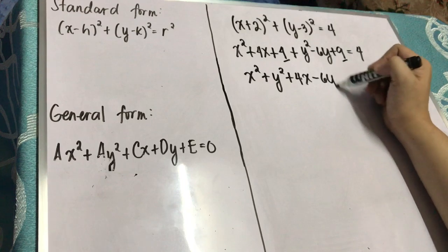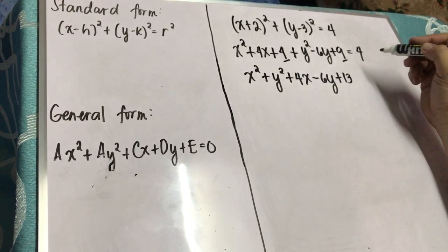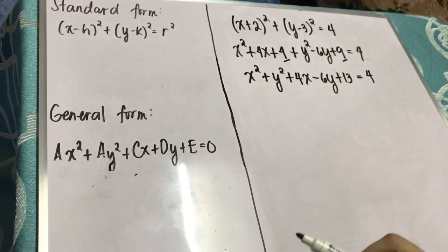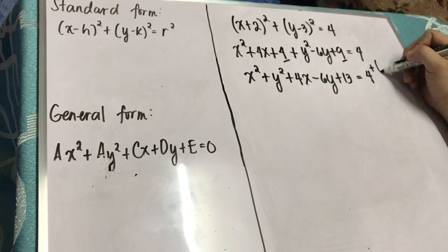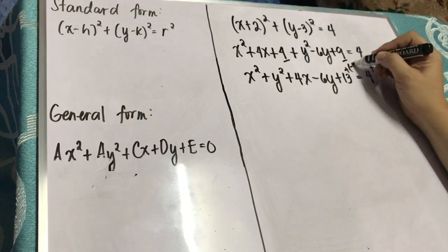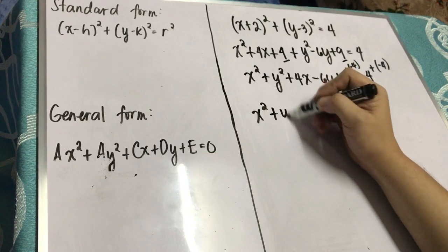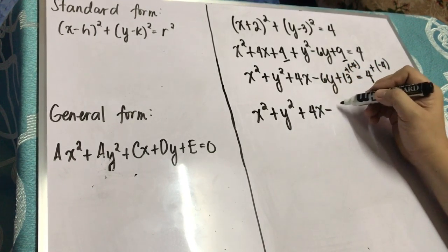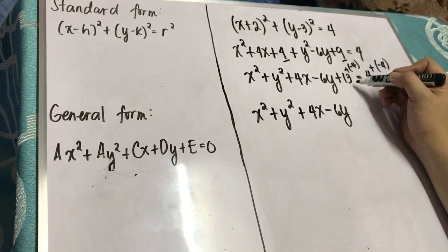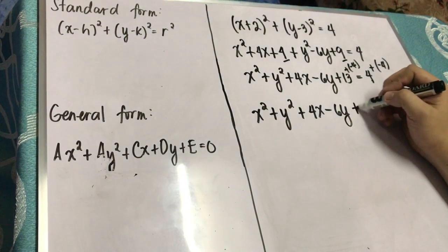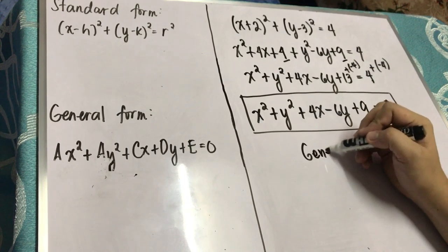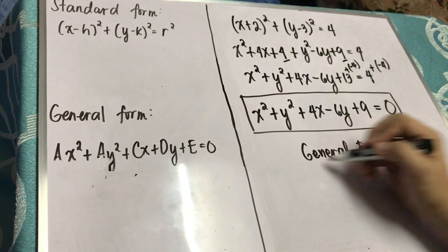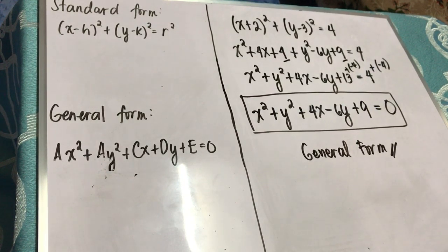Simplify the two constants on the left side of the equation: 4 plus 9 is 13. So you have x squared plus y squared plus 4x minus 6y plus 13, is equal to 4. Then we need to transpose 4 by adding the additive inverse of 4, which is negative 4, to both sides. So positive 13 plus negative 4 gives positive 9. Therefore: x squared plus y squared plus 4x minus 6y plus 9 equals 0. This is now the general form of the equation of a circle.